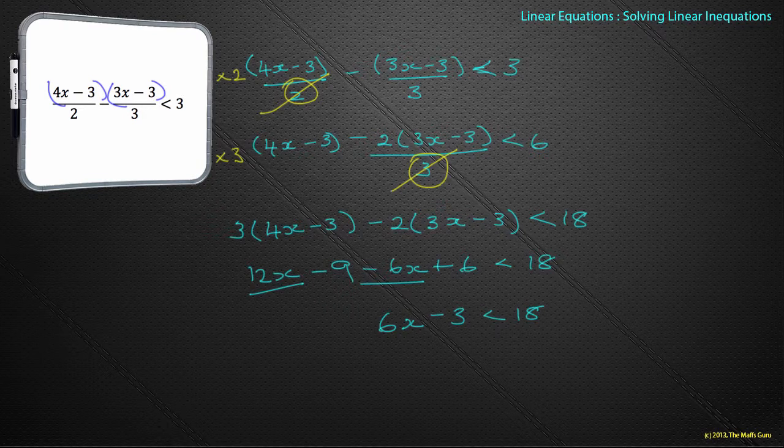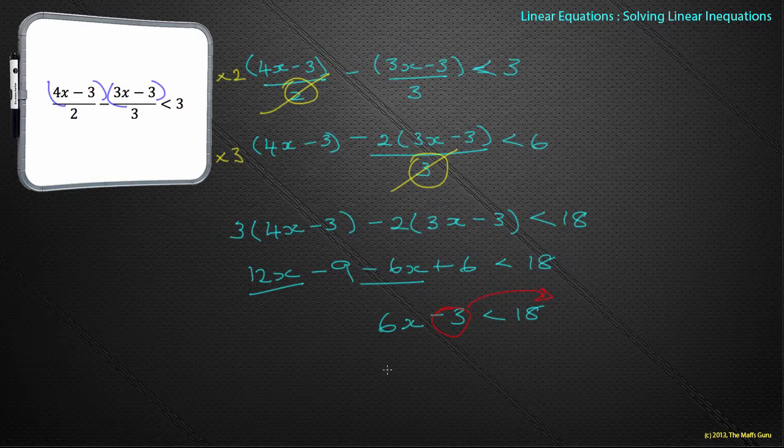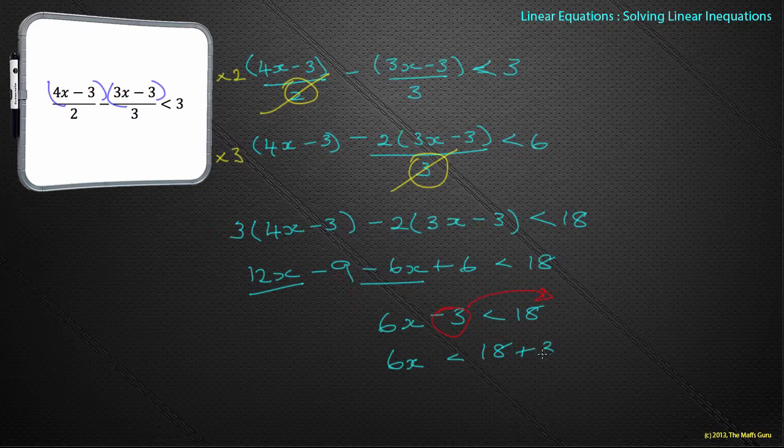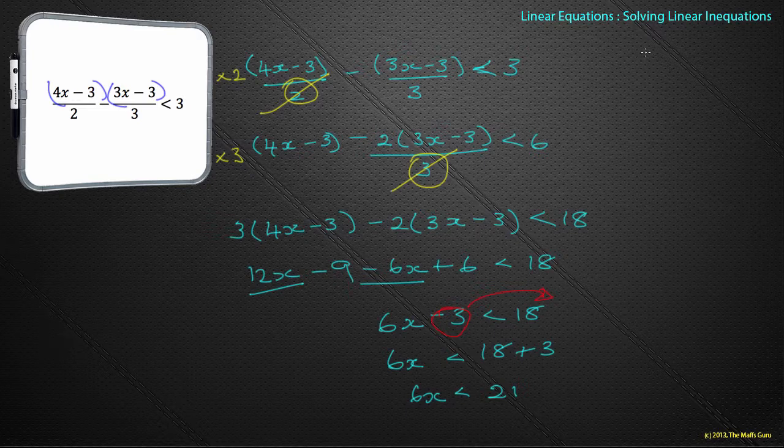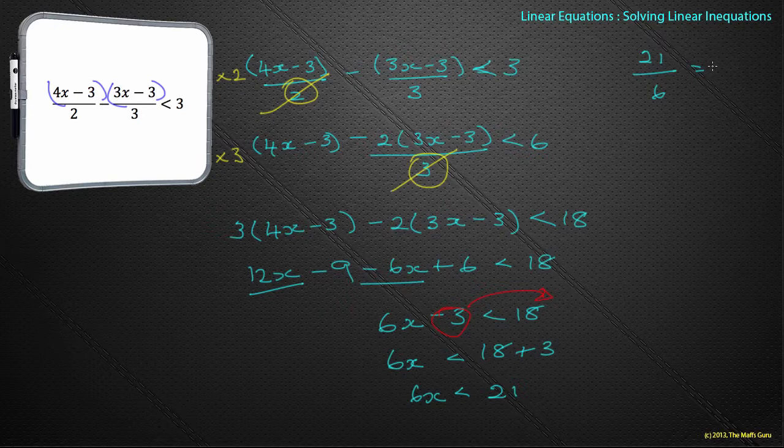Once again, we have a gooseberry. So we'll get rid of my minus 3, the gooseberry watching the 6 and the x kissing. So we have 6x is less than 18 plus 3. 6x is less than 21. Why can't these numbers be nicer? 18 plus 3 is definitely 21. So let's do a quick subcalculation.